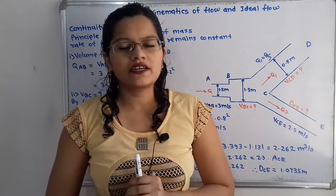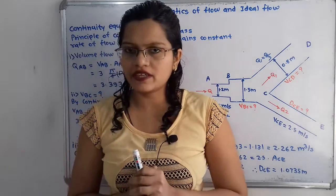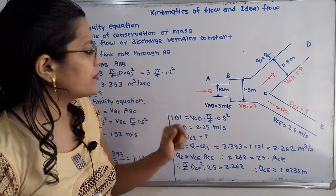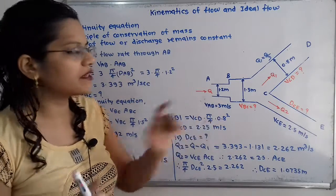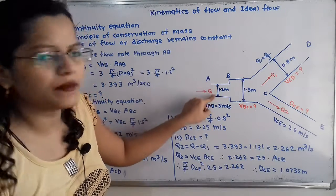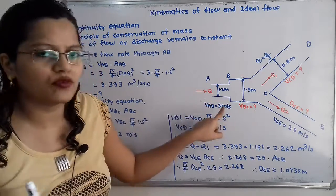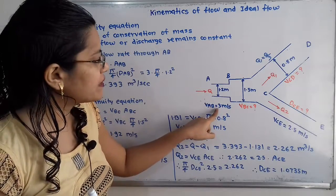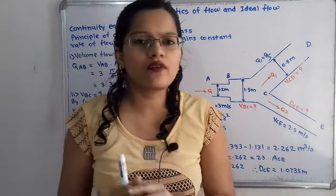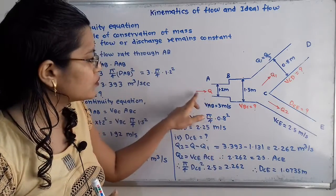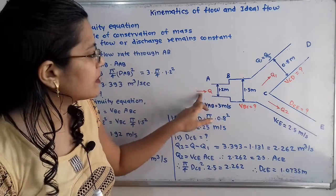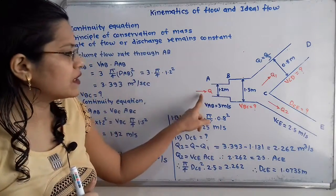Let us first understand the diagram as per the given data. The pipe AB is given with diameter 1.2 meter and velocity is also given as 3 meter per second, so V_AB equals 3 meter per second. We also show the rate of flow Q through this pipe AB, indicated with an arrow.